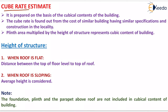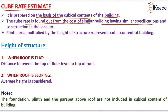The next type is the cube rate estimate. It is prepared on the basis of the cubical content of the building. The cube rate is found from the cost of a similar building having similar specifications and construction in the same locality. The cubical content of the building is found by multiplying the plinth area by the height of the structure.